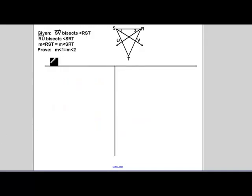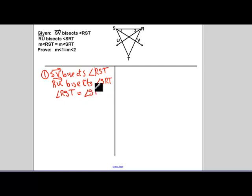Okay, next example. Now we are given SV bisects angle RST. RU bisects angle SRT. And the measure of angle RST is equal to the measure of angle SRT. Alright, kind of a big given there.